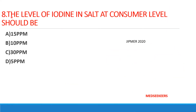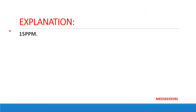At consumer level, the level of iodine in salt should be — option A: 15; option B: 10; option C: 30; option D: 5. Also, why are we fortifying salt with iodine? Comment your answers. Your answer should be 15 — at consumer level it is 15 ppm.